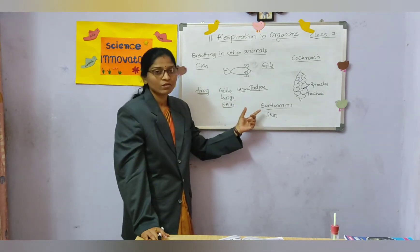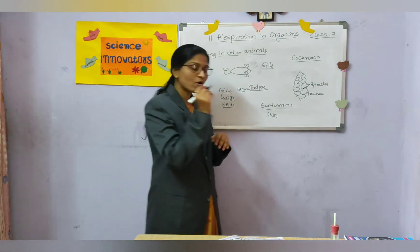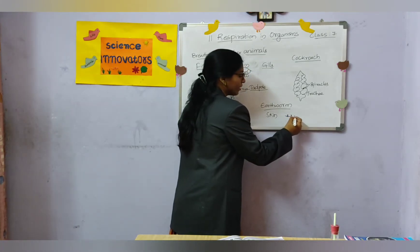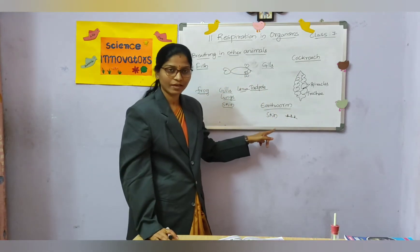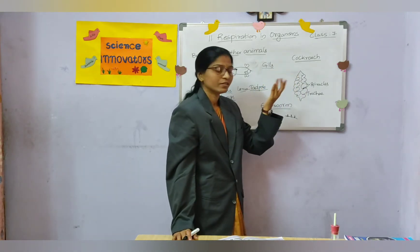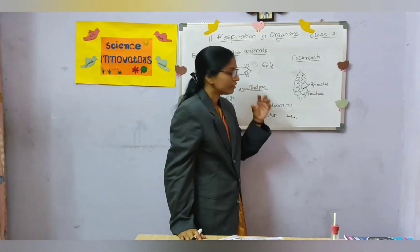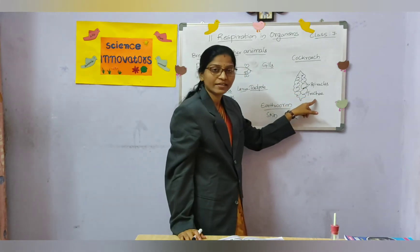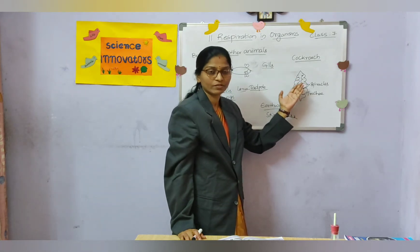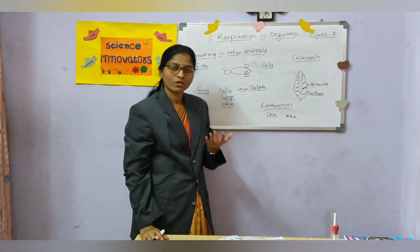The earthworm also respires through its skin. The skin of the earthworm is moist, and small pores present on the skin allow the exchange of gases to take place through the skin. For the cockroach, on its back side you can see small holes called spiracles. The network of spiracles forms the trachea — respiratory tubes present on the back side of the body of the cockroach. So the trachea are the respiratory organs in the cockroach.